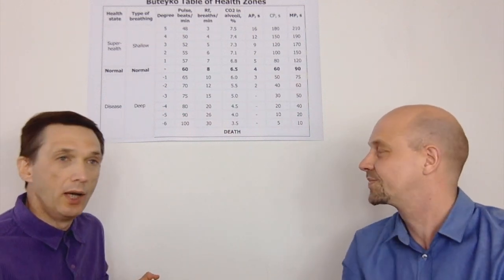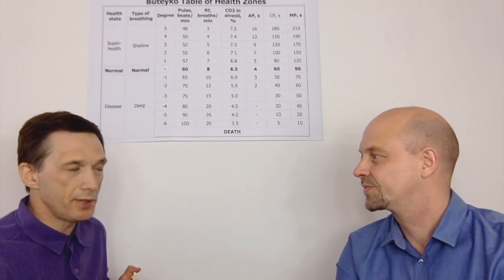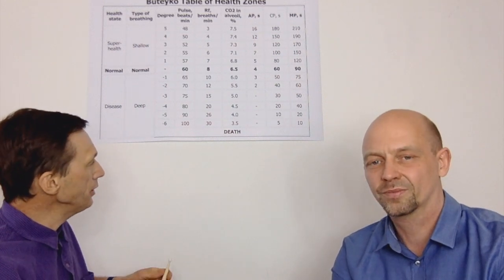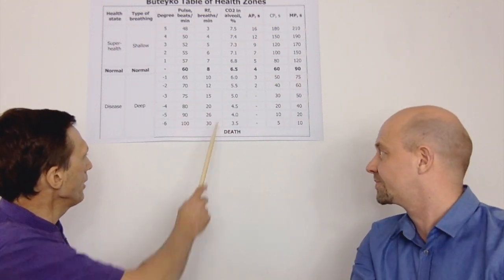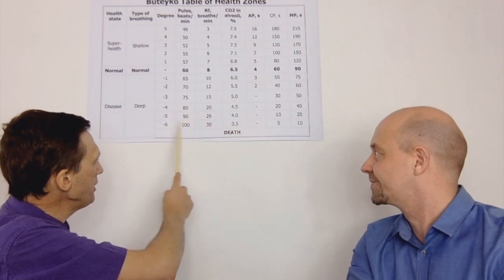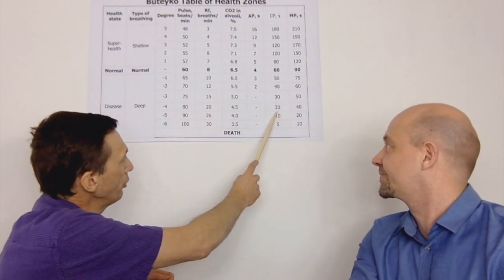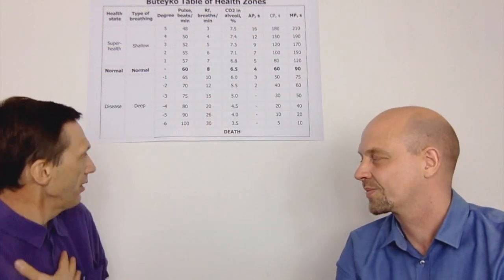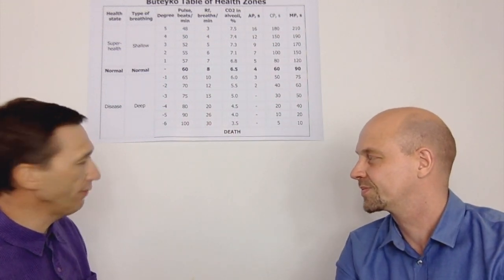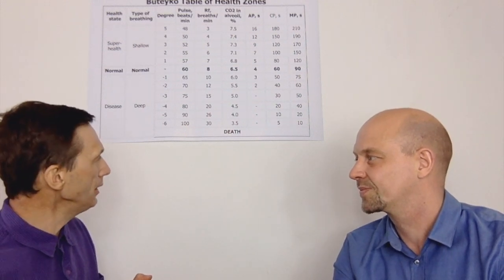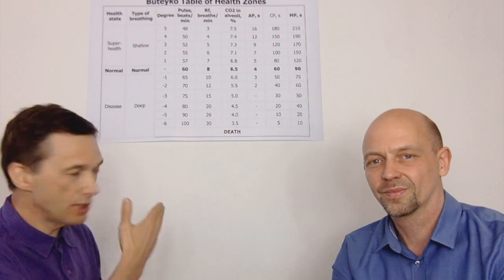Medical studies show that up to 90% of people who die from chronic diseases die in conditions of severe hyperventilation — over-breathing. Ordinary sick people would be around the zone where we have only 10 seconds for the body oxygen test, a very low result, meaning the breathing pattern is very heavy. We would breathe somewhere around 20 liters per minute or more. This is the initial point where we don't have an automatic pause.